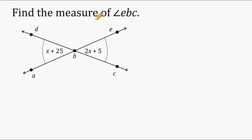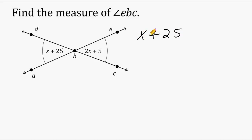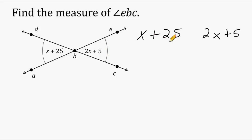What we have to do is figure out the measure of angle EBC, which is this angle right here, which we know is equivalent to angle DBA because they are vertical angles. This angle right here is represented by the expression X plus 25, and this angle right here is represented by the expression 2X plus 5. Because these two angles are vertical angles and therefore equivalent to each other, this expression must be equal to this expression. So we are going to take these two expressions and set them equal to each other.